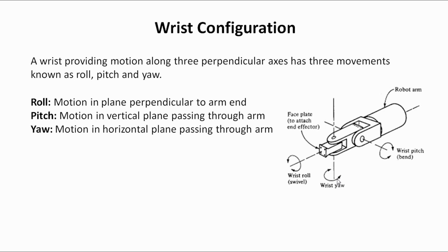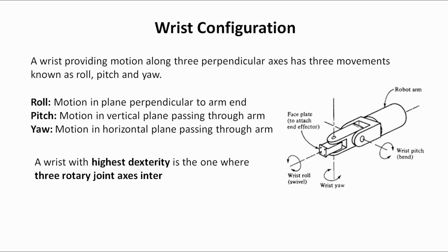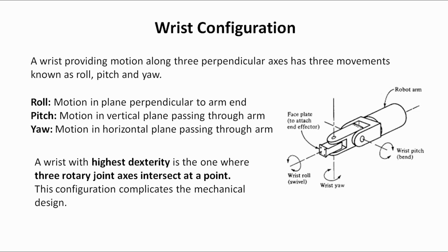A wrist with high dexterity is one where the three axes intersect at a point. If the three axes intersect, such a wrist will have high dexterity. In robotics, as dexterity is increased, the complication in mechanical design also increases. So in the wrist as well, if the three axes intersect, the mechanical design will become complicated.